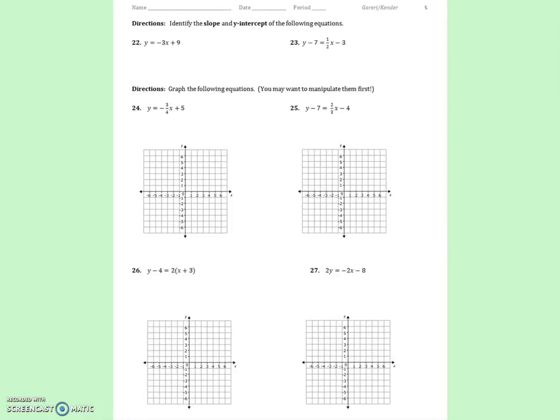Alright, for number 22 and 23, we're just identifying the slope and the y-intercept. So we're just going to say m equals and b equals. The slope is negative 3, the y-intercept is 9. Done. For number 24 through 27, you just have to graph the equations. You may want to manipulate them first, which means turn them into slope-intercept form if it works for you.